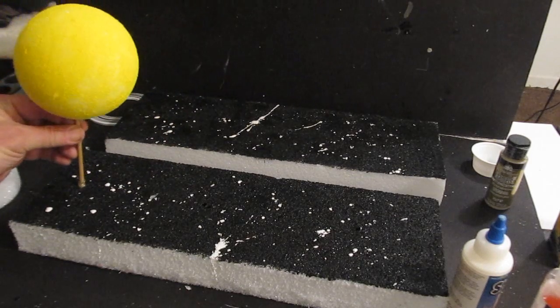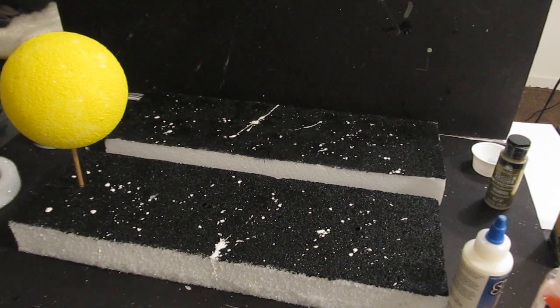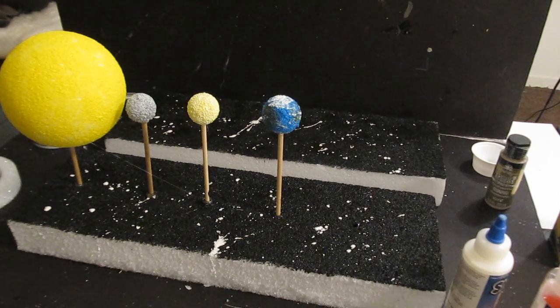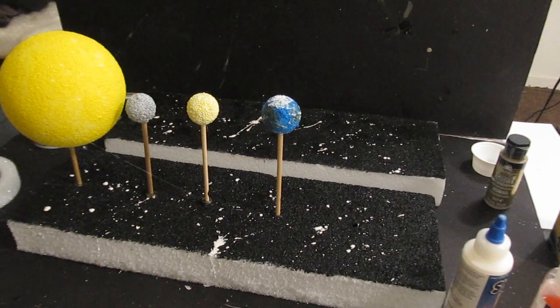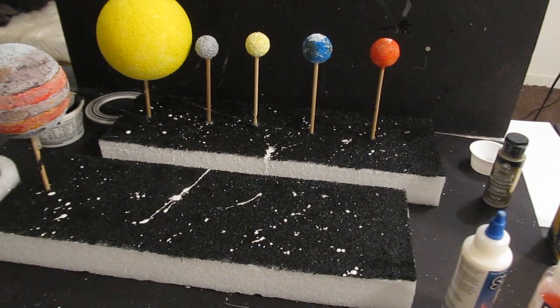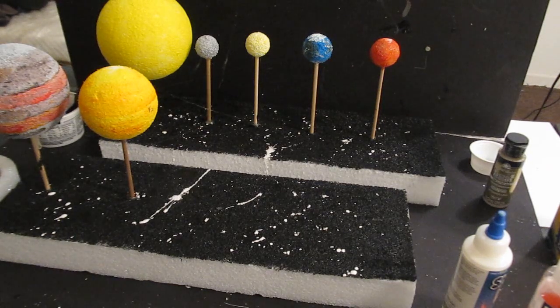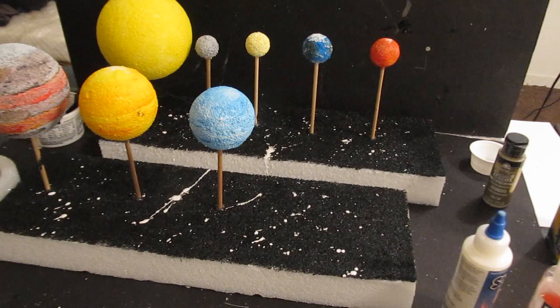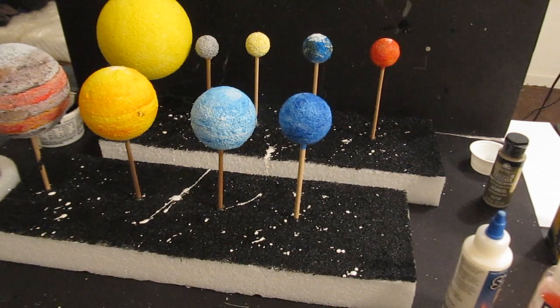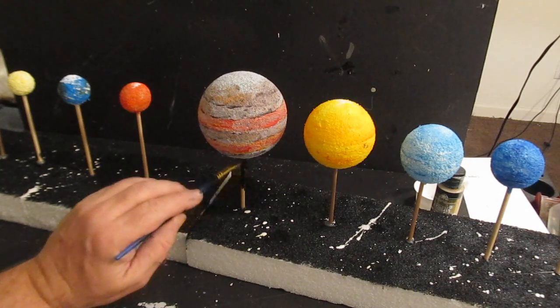But once that black background, or base ground, I guess you call it, is dry, then you can go ahead and glue in all the various celestial objects. The sun, Mercury, Venus, Earth, Mars, Jupiter, Saturn, Uranus, Neptune, and Pluto. And finish the whole thing off.